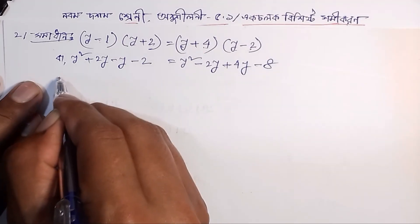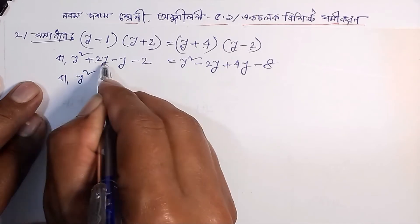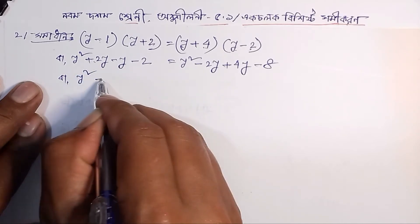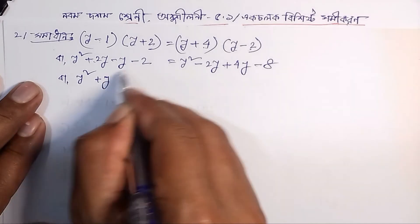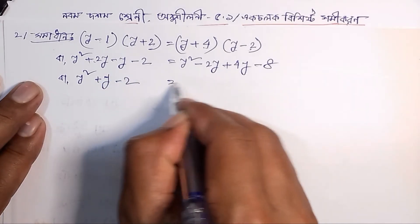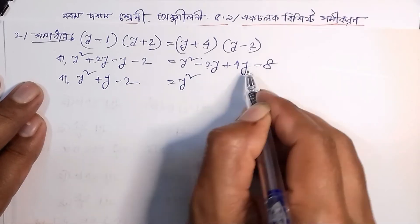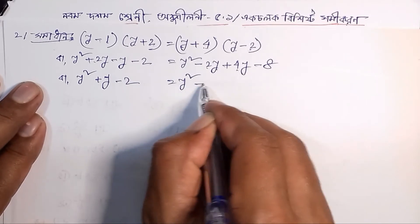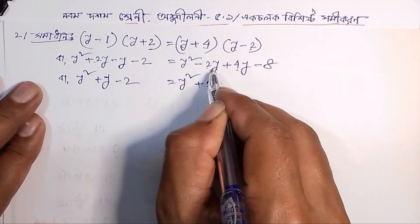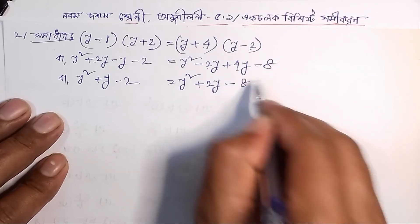So this is y squared plus 2y minus y, so this is plus y. And this is minus 2 is equal to y squared minus 2y plus 4y, so this is plus 4y minus 2y is equal to minus 8.